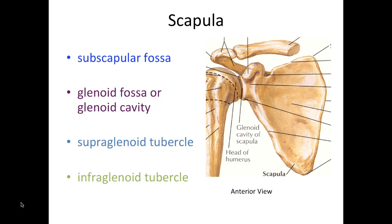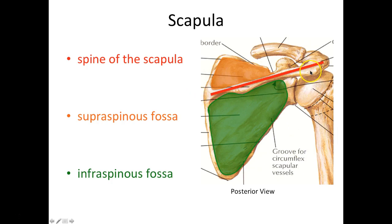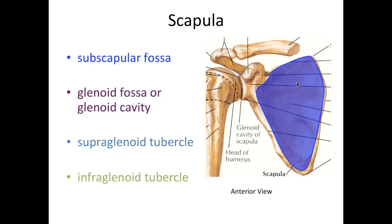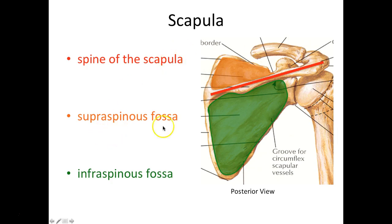Next we'll look at an anterior view of the scapula. You can easily tell whether you're looking at an anterior or posterior view — if you're looking at a nice smooth surface with no spine of the scapula, you know you are looking at an anterior view. On this anterior view you will find the subscapular fossa — again a shallow depression. Breaking down the words: sub meaning below, scapular meaning scapula. Breaking down supraspinous fossa: supra means above, spinous refers to the spine of the scapula, and fossa means a shallow depression — so this is a shallow depression above the spine.